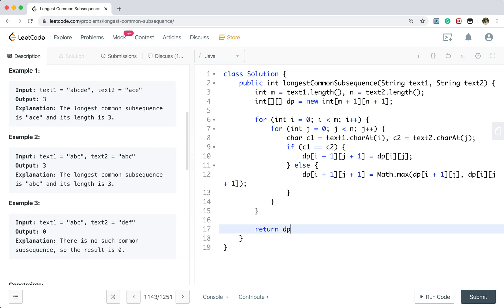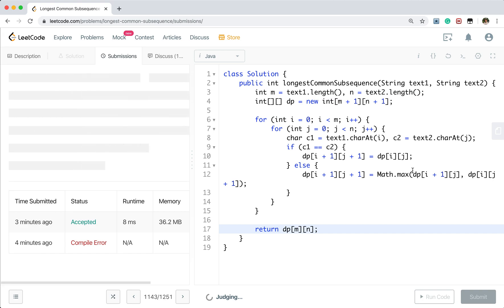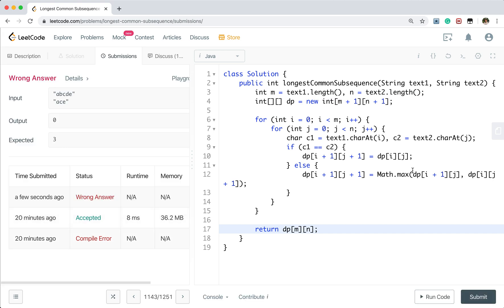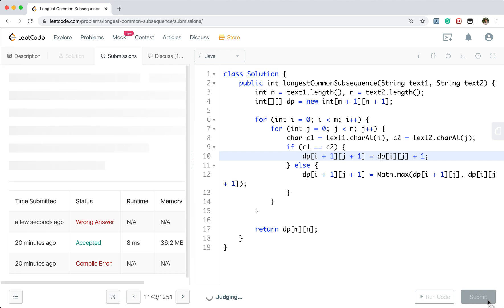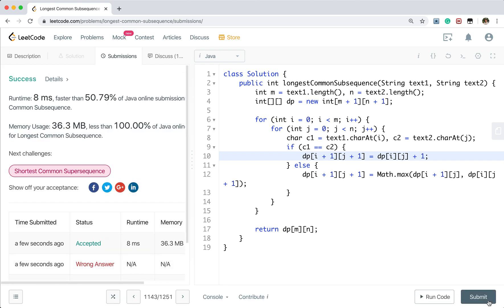Finally we just return DP[M][N]. Oh sorry it should be plus 1. Thank you very much, see you next time.